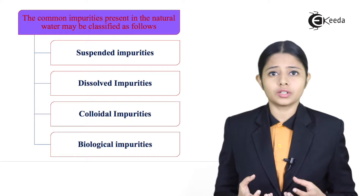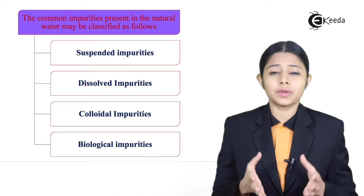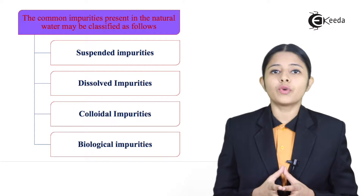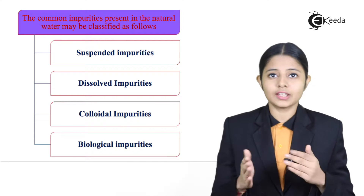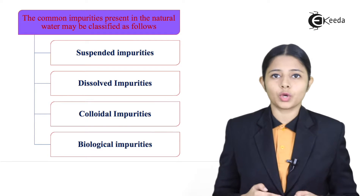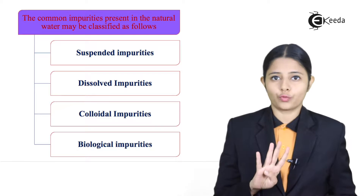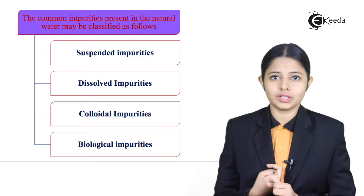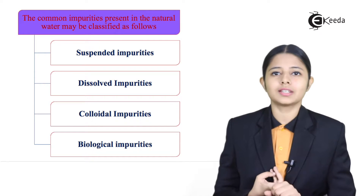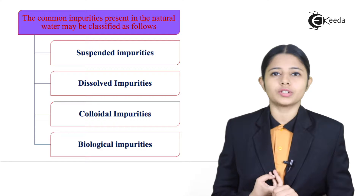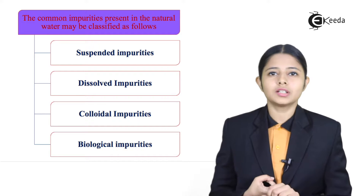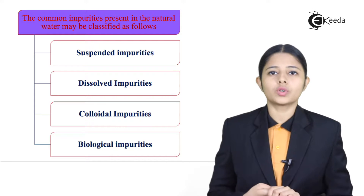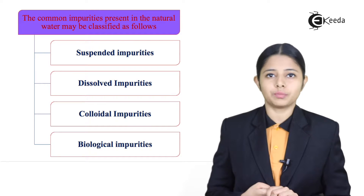There are many kinds of impurities which are already present in water. We have defined and characterized all these impurities into 4 forms. The first one is suspended impurities, second is dissolved impurities, third is colloidal impurities, and fourth is biological impurities.